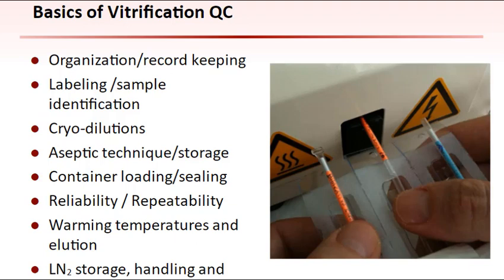The basic quality control factors needed to make vitrification a consistent, efficient, reliable, and effective ART procedure include the following. Organization: having paperwork or computer records as well as vitrification setup fully prepared prior to initiating vitrification. Labeling: ease, accuracy, and reliability of sample labeling and identification are of critical importance. An ideal system includes a dual color system with duplicate labels or a tamper-proof label system. Cryodilutions: distinct dilution steps so that solution purity is maintained and precisely timed without variation.